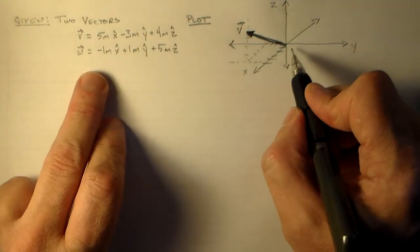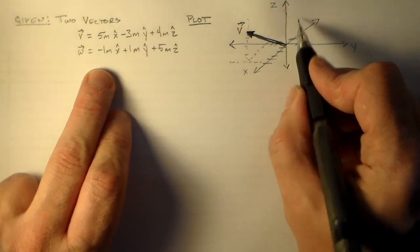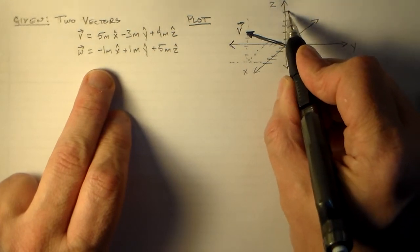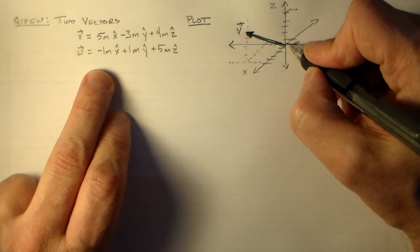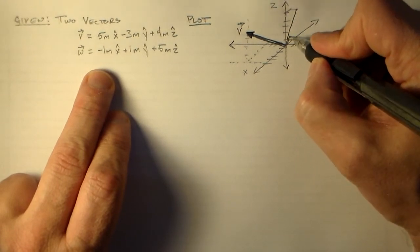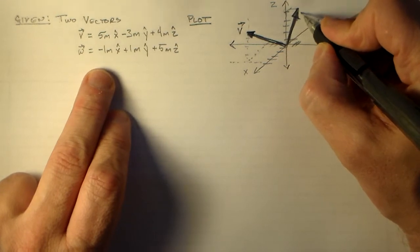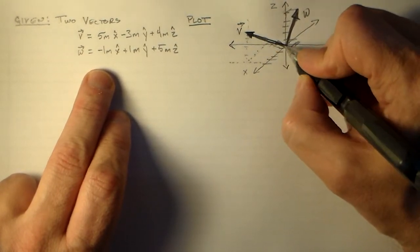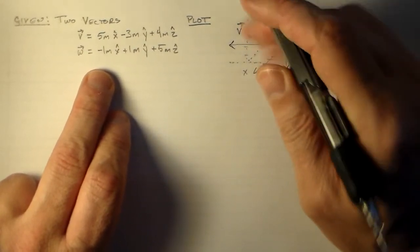And then we can do the same thing for w. So w is minus one and one. And then you come all the way up here. So maybe it's better to go one, two, three, four, five. Go minus one and one over. And draw out this wonderful vector w. Okay, and so maybe we can use this to tell us what sort of things we can talk about between two vectors.